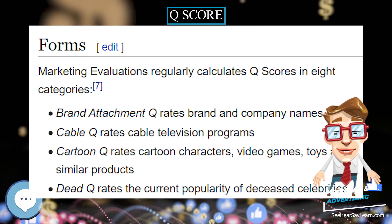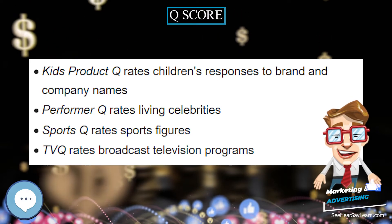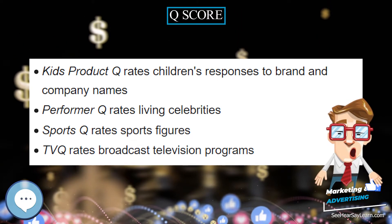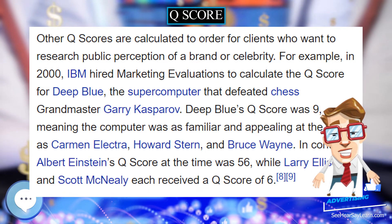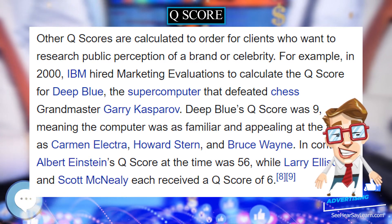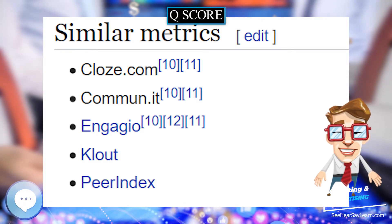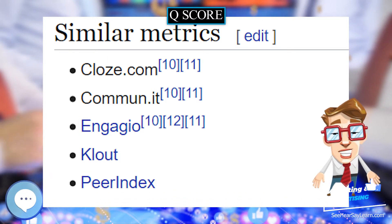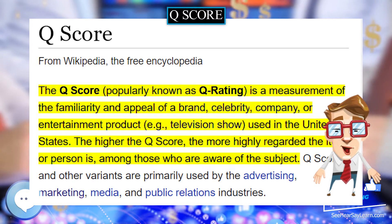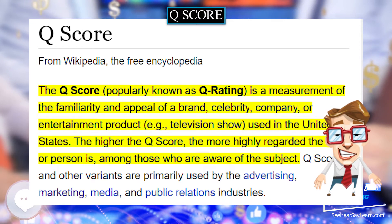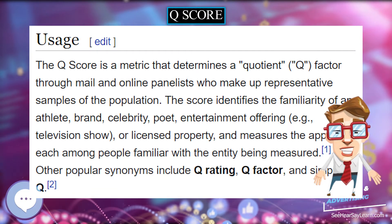The Q-score is a metric that determines a quotient factor through mail and online panelists who make up representative samples of the population. The score identifies the familiarity of an athlete, brand, celebrity, poet, entertainment offering — for example, a television show — or licensed property, and measures the appeal of each among people familiar with the entity being measured.